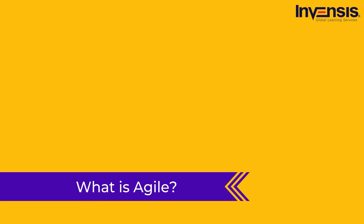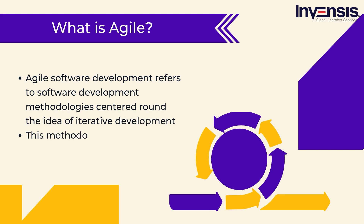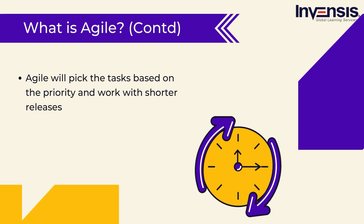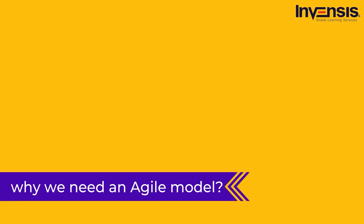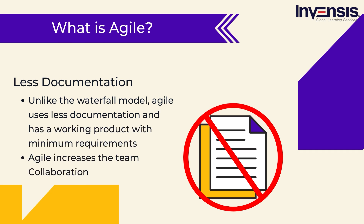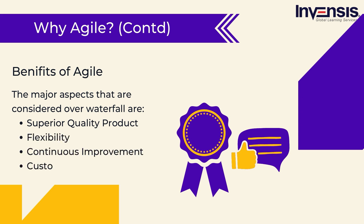What is Agile? Agile software development refers to software development methodologies centered around the idea of iterative development. This methodology mainly focuses on team collaboration and customer feedback. Agile picks tasks based on priority and works with shorter releases. With iterative development, this model achieves continuous improvement along with the minimal viable product. We need Agile to overcome the heavy documentation process of the Waterfall model and to increase collaboration between team members. Instead of long documentation, the Agile team delivers a working product to the customer for feedback. Major benefits of Agile over Waterfall include: superior quality product, flexibility, continuous improvement, and customer satisfaction.